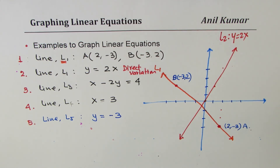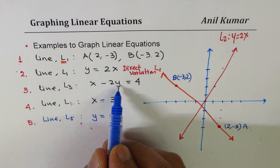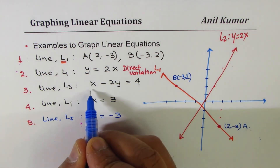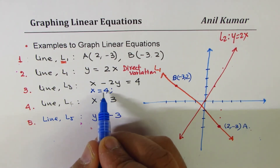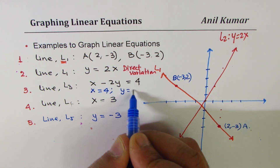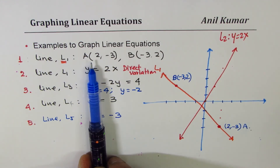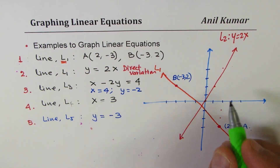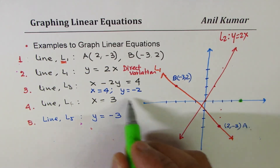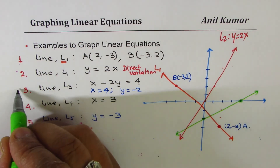For L3 in standard form — x minus 2y equals 4 — find x and y intercepts. If y equals 0, x equals 4. If x equals 0, minus 2y equals 4 so y equals minus 2. The x and y-intercepts are 4 and minus 2 respectively. Joining these two points gives line L3.